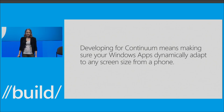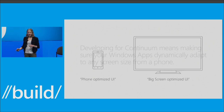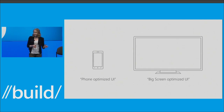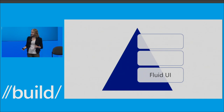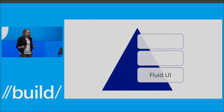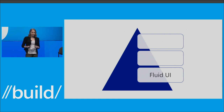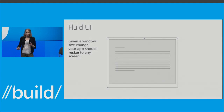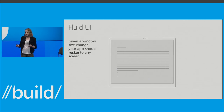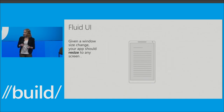The effective resolution of a device is determined by a combination of the actual physical pixel density and the theoretical viewing distance. The big benefit is that you as developers can design and build your UI one time, and the Windows system does work on your behalf to make sure that UI looks great on any screen. Developing for Continuum really means making sure your Windows app adapts dynamically to any screen from a phone. We really expect users to see phone-optimized UI on the phone and big-screen-optimized UI on the big screen.